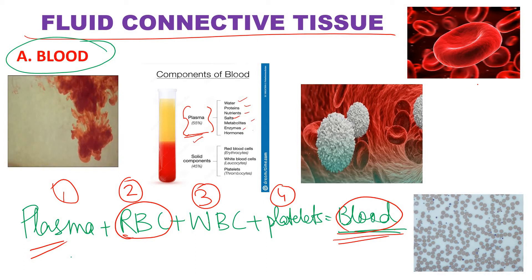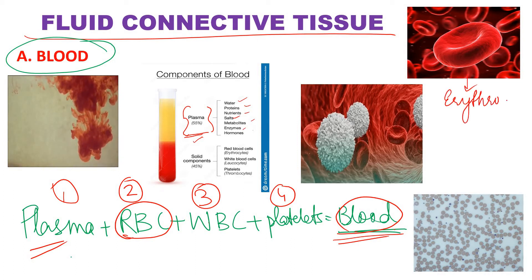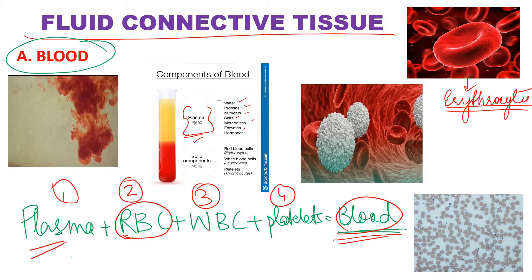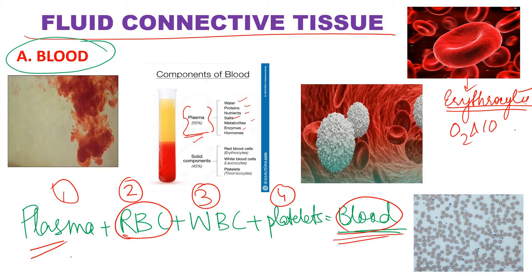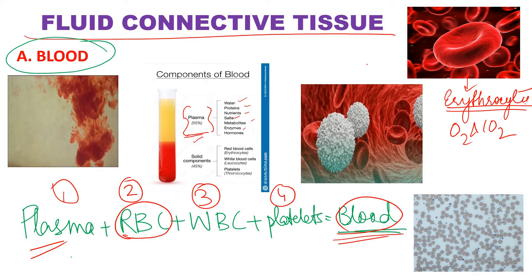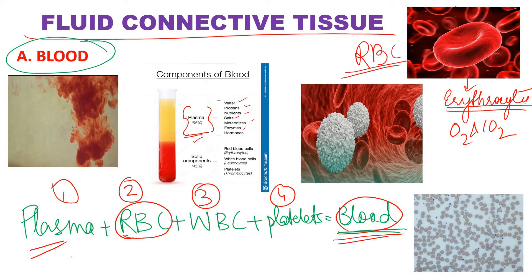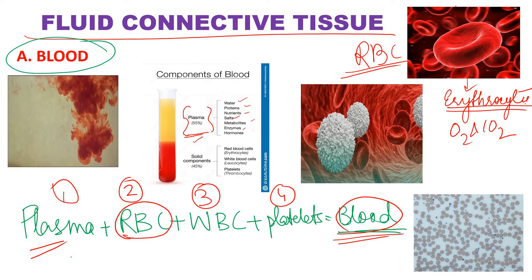Then comes red blood cells, also called erythrocytes. The role of these erythrocytes is that they transport oxygen and carbon dioxide to various parts of the body. This is the function of RBC or erythrocytes. Because of the red color in these red blood cells, that is why our blood is red in color.